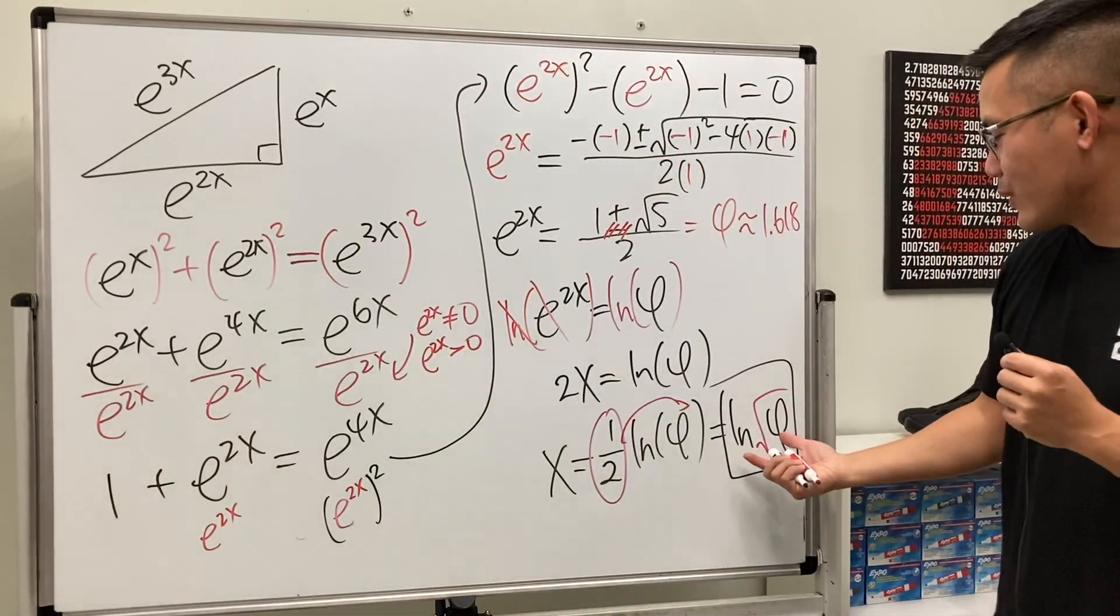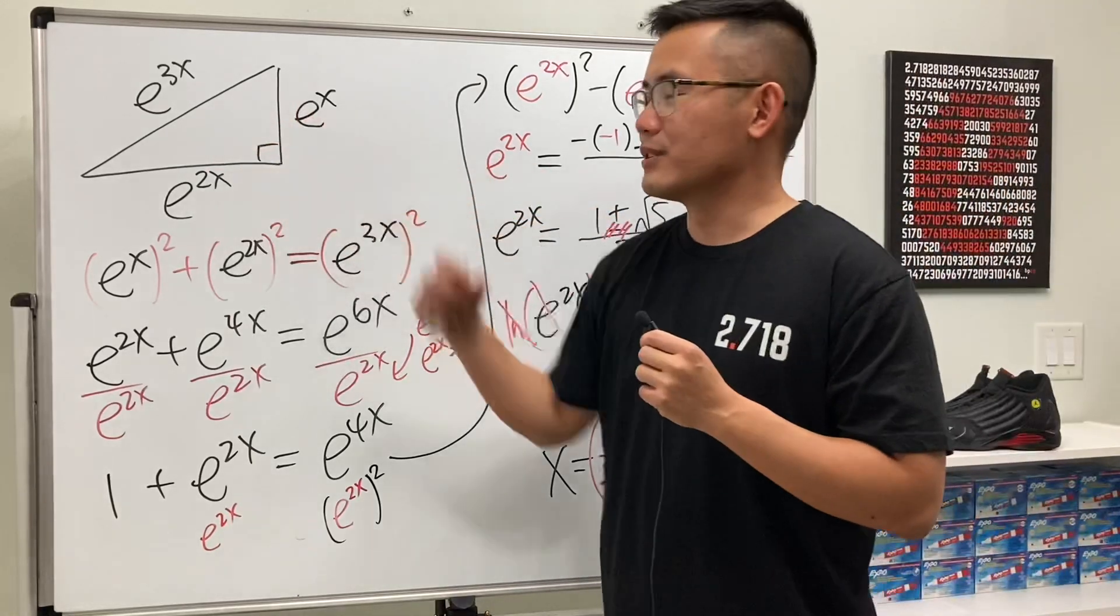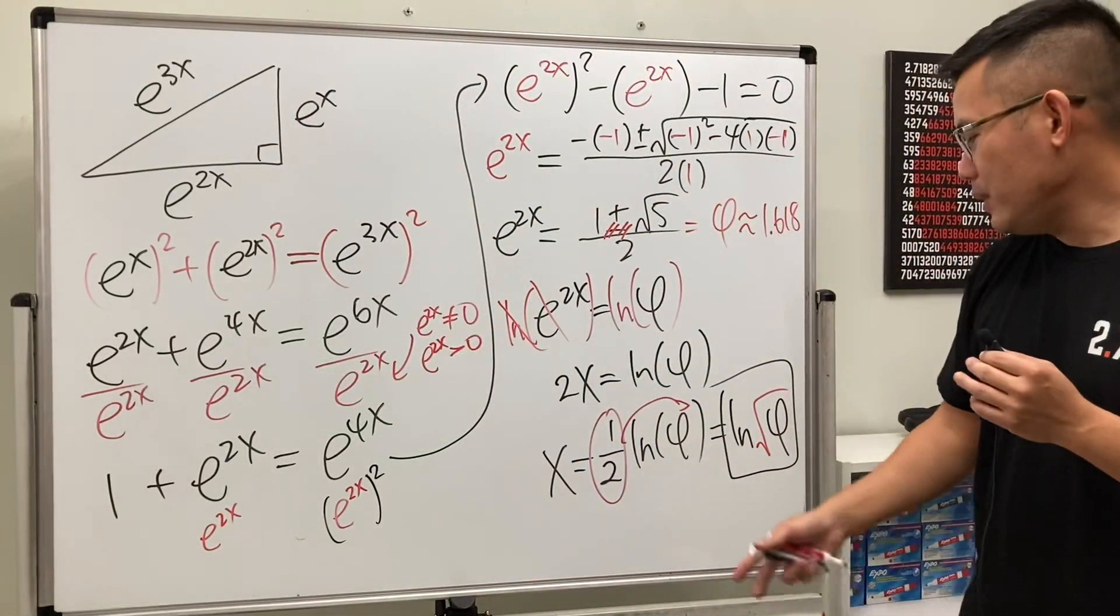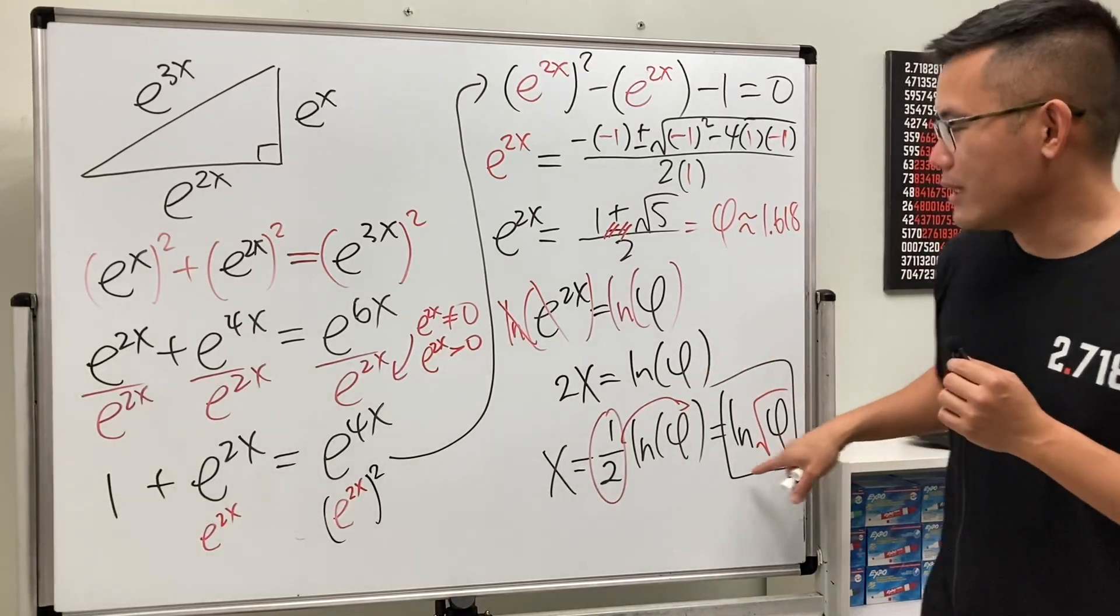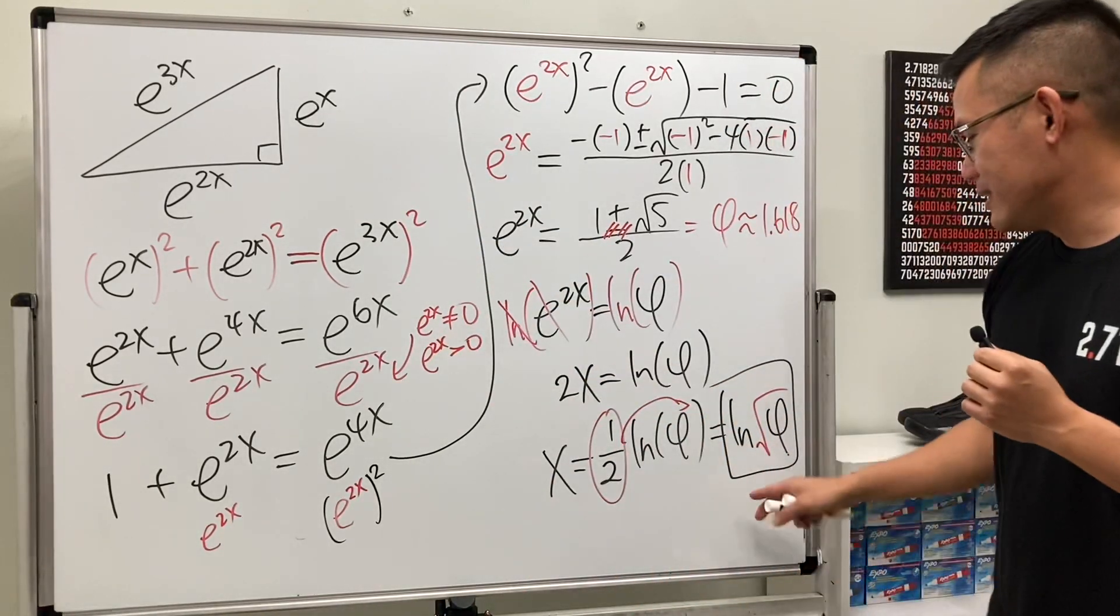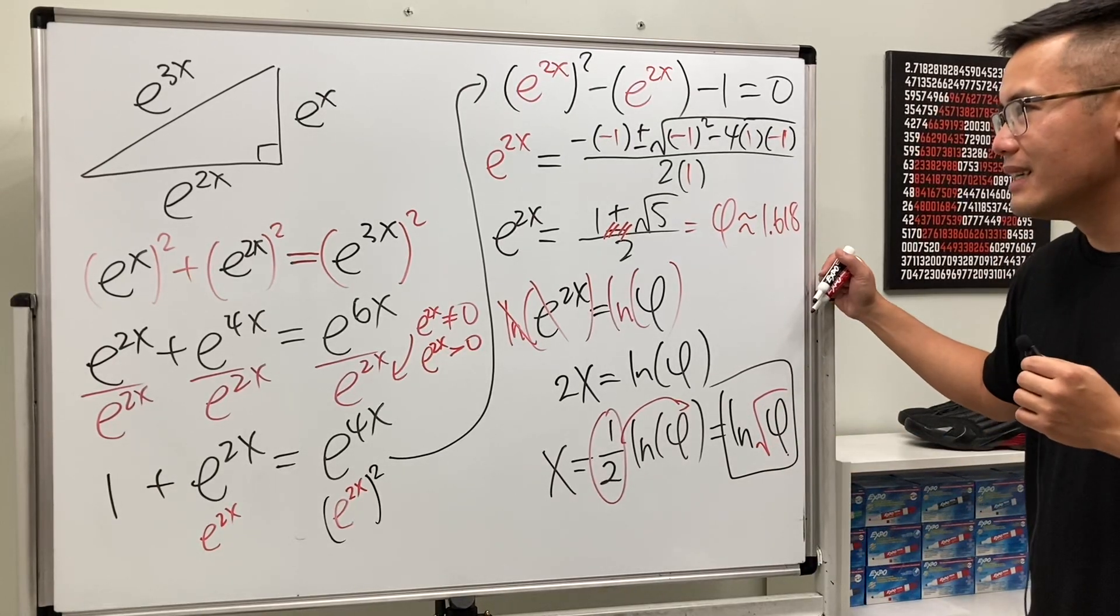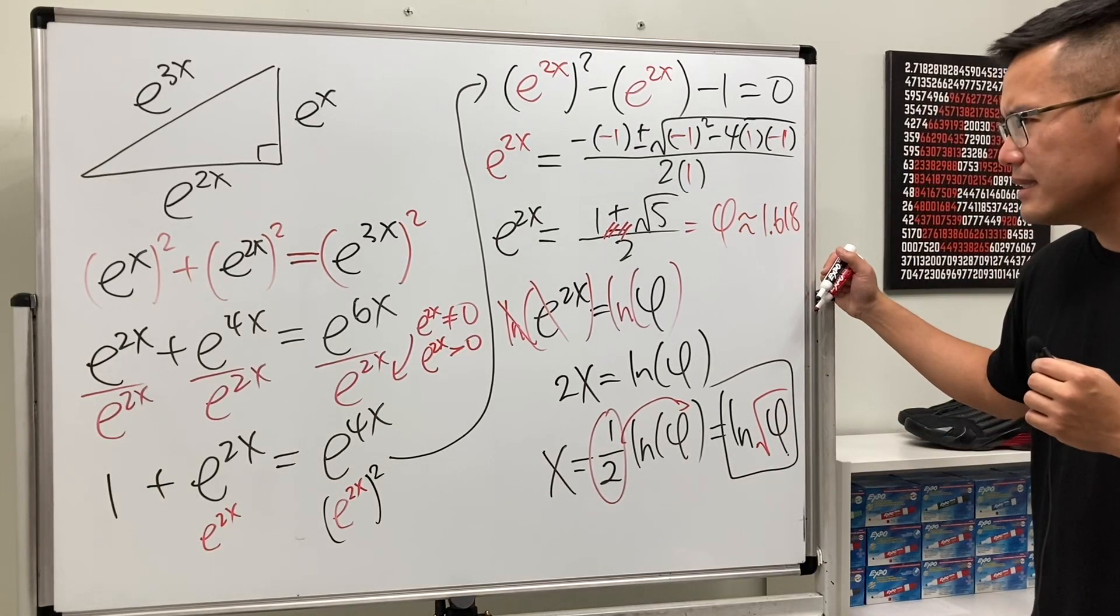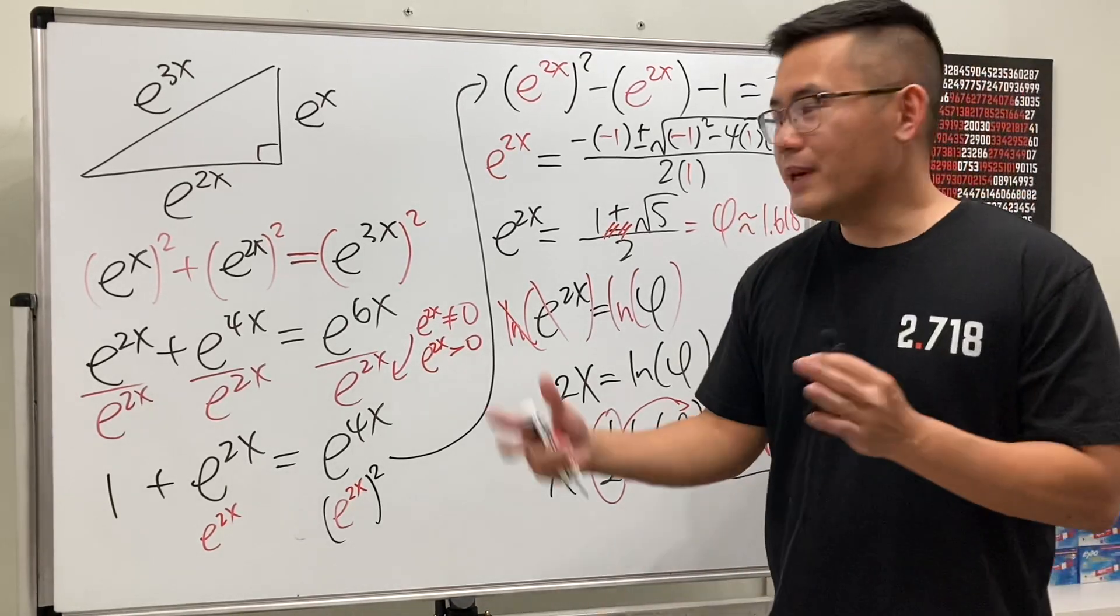But maybe if you simplify it, you can tell me the actual sides of the right triangle, right? Just go ahead and plug that into here, then you'll see that, yeah, they cancel things out pretty nicely. Yeah, because e and ln cancel out. But anyway, hopefully you got all this. Thanks!